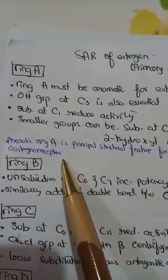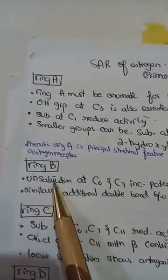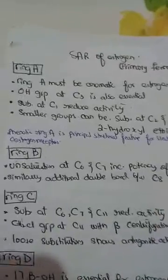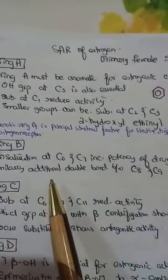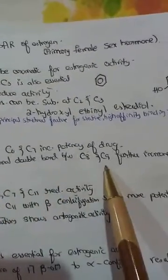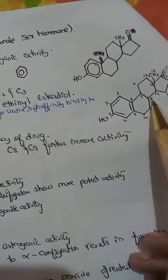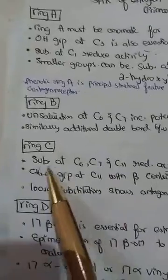Ring B: The unsaturation at C6 and C7 increases the potency of the drug. Similarly, if there is an additional double bond between C8 and C9, it further increases the activity. Ring C: Substitution at C6, C7, and C11 reduces the activity of the compound.